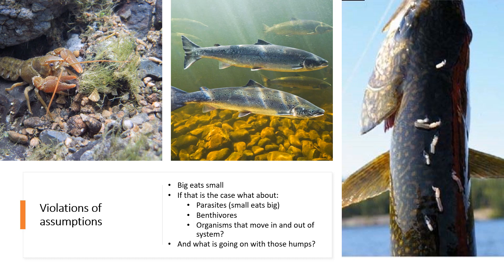There are times when violations can appear. You're always assuming big eats small, but sometimes that doesn't hold: crayfish can rip things up, so a big thing can eat a big thing. Parasites do it the opposite way — small eats big — so if parasites are very abundant, size spectrum could be violated. Benthivores aren't using the food web we typically think about. And organisms like salmon move in and out of a system, taking materials out or bringing them in, so they're not limited to a static energy box — their energy comes from many other energy sources.